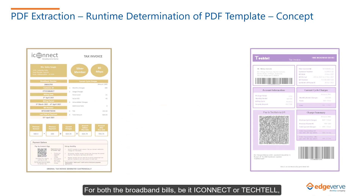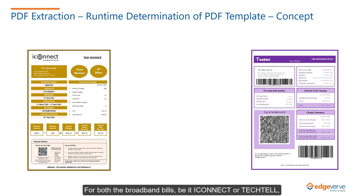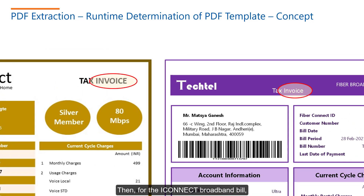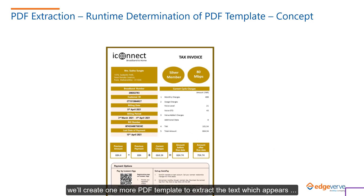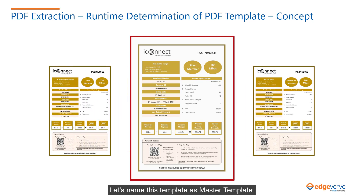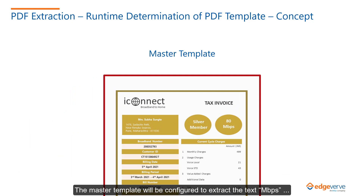For both the broadband bills, be it iConnect or Tectel, we will first find the common word in these PDF documents. For this demonstration, we will opt for the keyword invoice. Then for the iConnect broadband bill, we will create one more PDF template to extract the text which appears in all the iConnect bills. Let us name this template as master template. The master template will be configured to extract the text mbps based on the corner reference of the search string invoice.